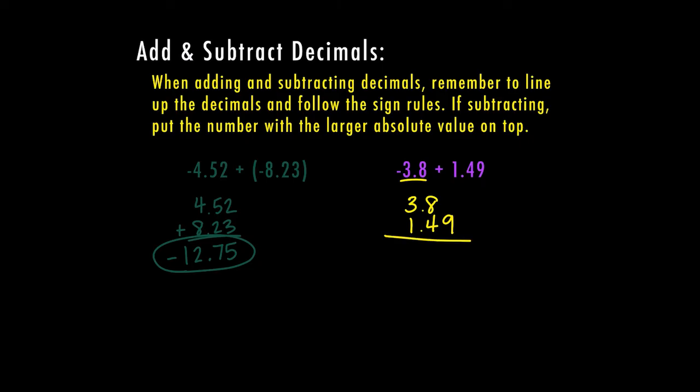And because I have more digits on the bottom, I'm going to go ahead and add a zero here for a placeholder. Now I can subtract, but I need to borrow first. So once I borrow, 10 minus 9 is 1, 7 minus 4 is 3, bring down my decimal and 3 minus 1 is 2. And then I'm going to go back to the original problem. Because the larger absolute value is a negative, my answer is actually going to be a negative 2.31.